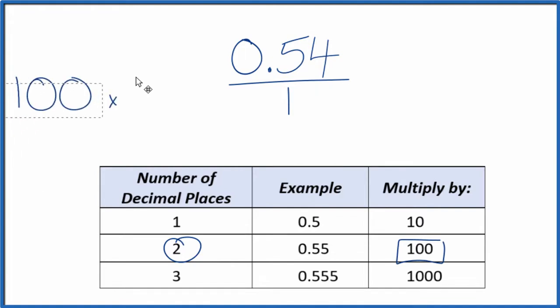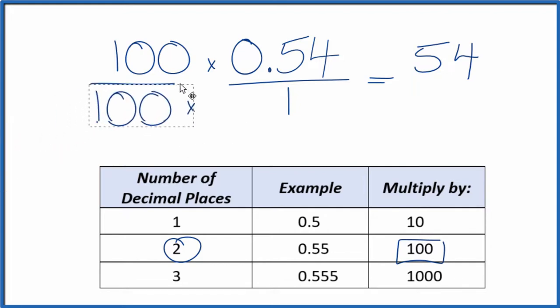So we multiply the numerator by 100. 100 times 0.54, that gives you 54. So there's our whole number. But we can't just multiply the numerator. We also have to multiply the denominator by 100. 100 divided by 100, that's 1.